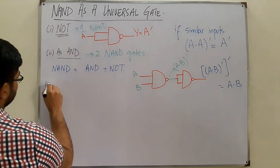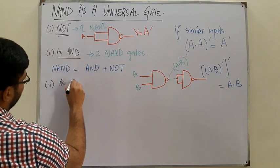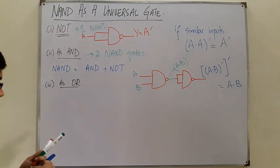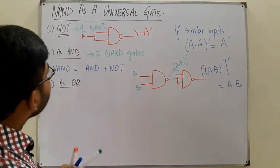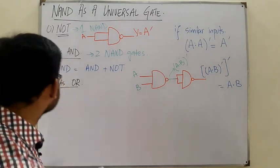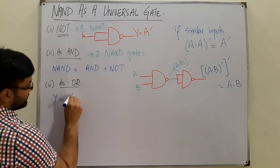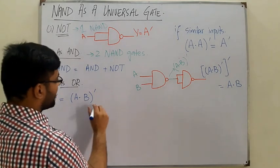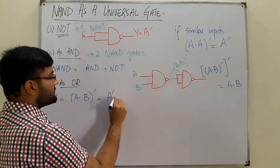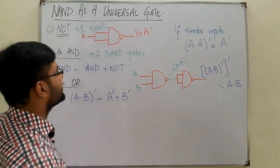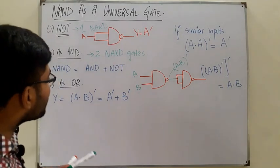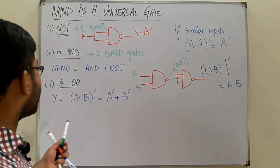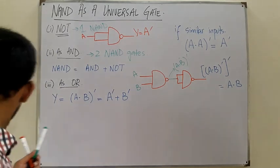Now, NAND used as an OR gate. The NAND function is (A AND B) complement. Applying De Morgan's law, this equals A complement OR B complement — making it a "bubble OR" form. To realize an OR gate, we need to provide complemented inputs to a NAND gate. So we need A complement and B complement as inputs to a NAND gate.